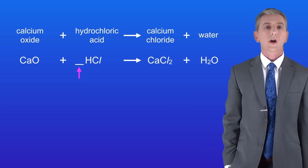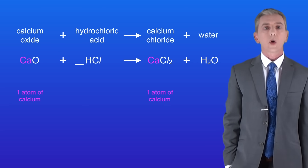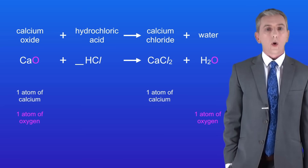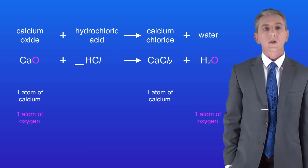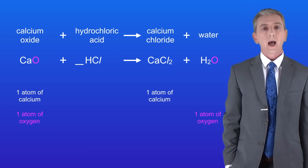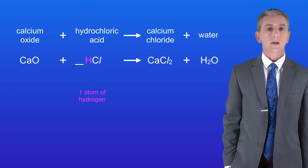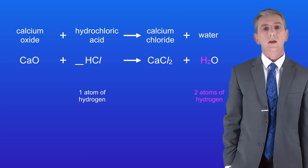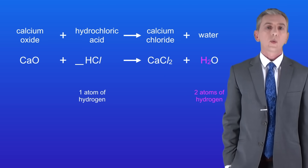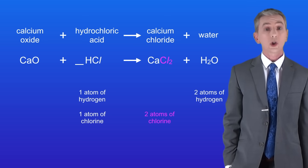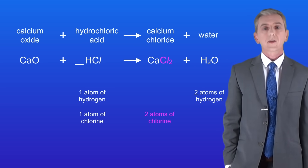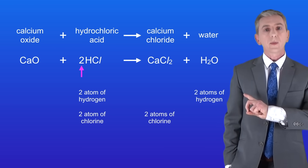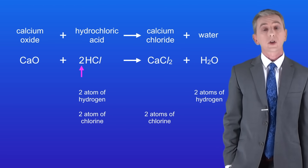We've got one calcium atom on both the left and the right hand sides so the calcium is balanced. We've also got one oxygen on both sides so the oxygen is balanced. However we've got one hydrogen atom on the left hand side and two hydrogen atoms on the right hand side, so the hydrogen is not balanced. We've also got one chlorine atom on the left and two chlorine atoms on the right, so the chlorine is not balanced. If we place a large two in the space, we now have two atoms of hydrogen and two atoms of chlorine on the left hand side, so the equation is balanced.